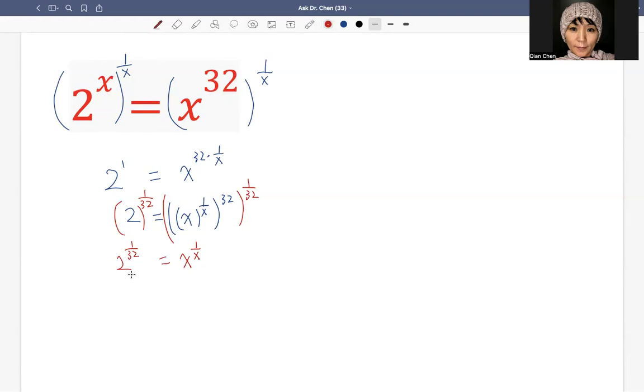2 raised by 1 over 32 on the left hand side. Now what we have to do is we have to match up. So if we multiply 2 by 2 over 2, we get 2 raised by 2 over 64.